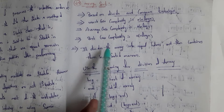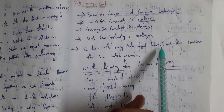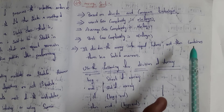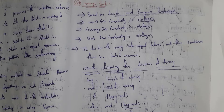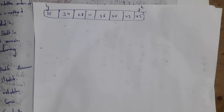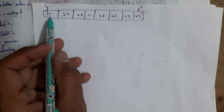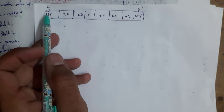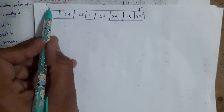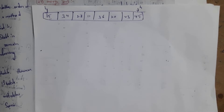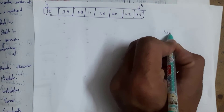Merge sort divides the array of elements into two equal halves and then combines them in a sorted manner. For example, I took an array of 8 elements. The first element is known as the lower element and the last element is known as the higher element. The formula for merge sort is: (lower + higher) / 2.